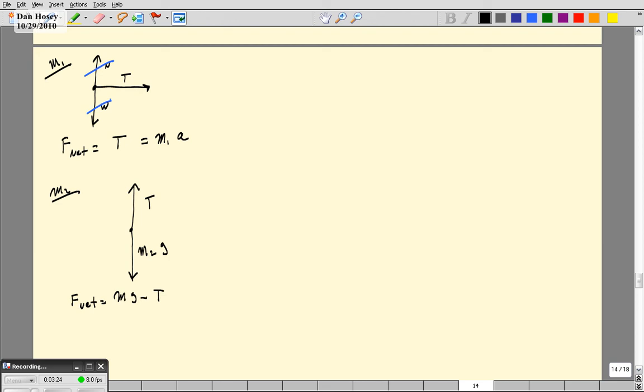At first this is unsettling for people because they're used to down being negative and up being positive. But remember, we've defined our coordinate system such that this is actually the positive direction. So that's why this, when we plug in here, is actually positive. So this is going to equal M2 times A.